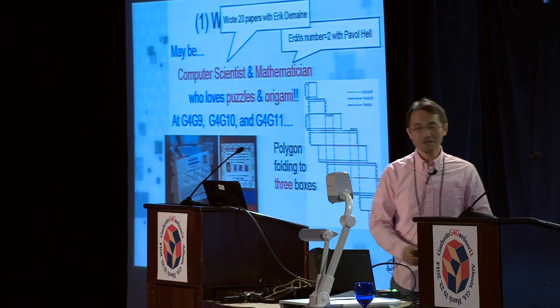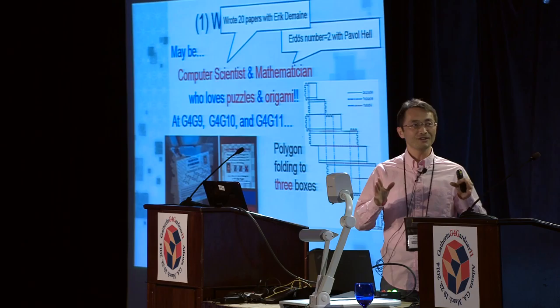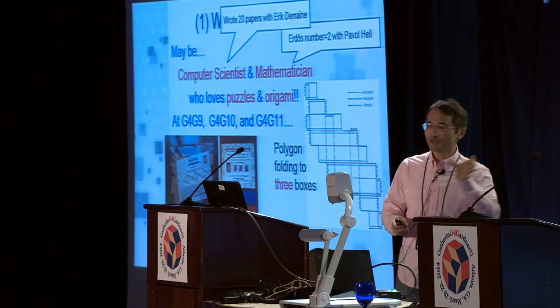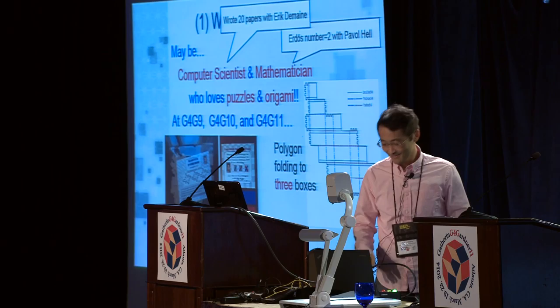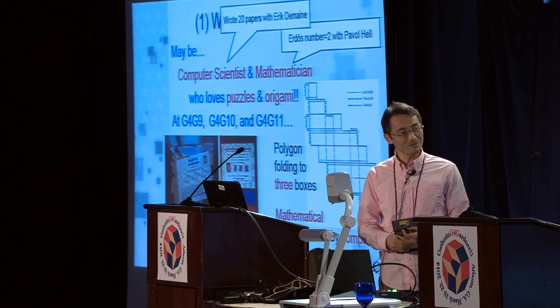And this time, I prepared the improved one of G4G 9. We finally found some kind of very weird polygon. And depending on the way of foldings, you can obtain three different boxes just from one polygon. It's a very kind of weird pattern. And I might say that's a kind of mathematical puzzle by computer, so it represents me.